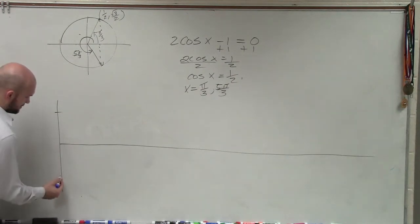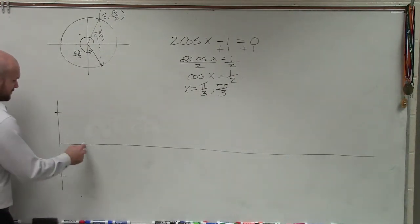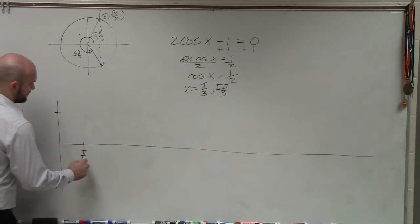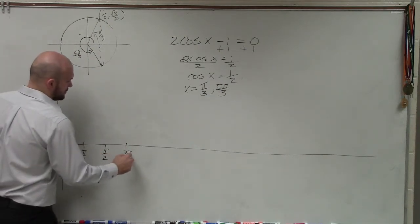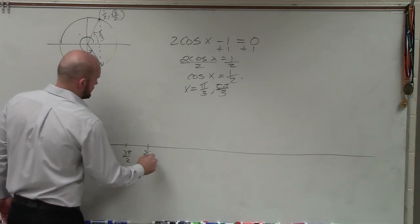So it's going to go up to 1, down to negative 1. We have an x scale of pi over 4. So let's have pi over 4, pi halves, 3 pi over 2, 2 pi.